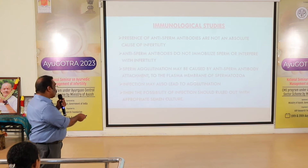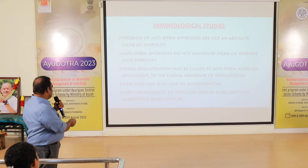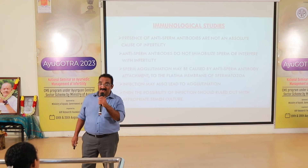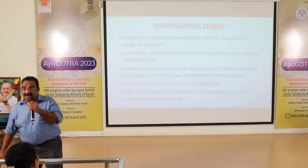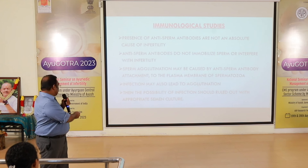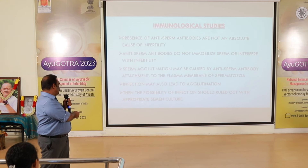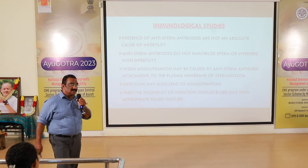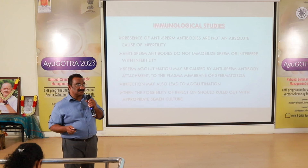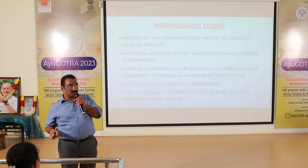Infection may also lead to spermatozoa agglutination. The possibility of infection should be ruled out with appropriate semen culture. Just as with UTI where more than five cells prompt a urine culture, in suspected cases semen culture should be advised. Infection as well as anti-sperm antibodies can lead to spermatozoa agglutination.